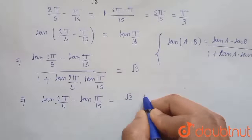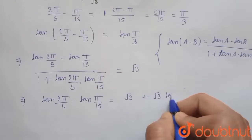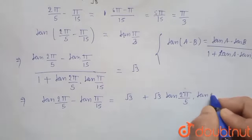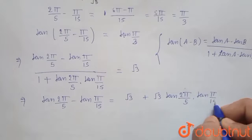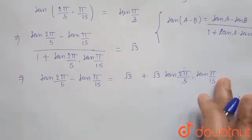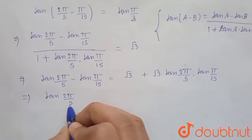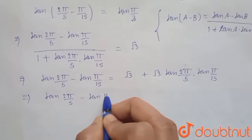Now we write this on the left-hand side. We get tan 2π by 5 minus tan π by 15 minus √3 tan 2π by 5 tan π by 15